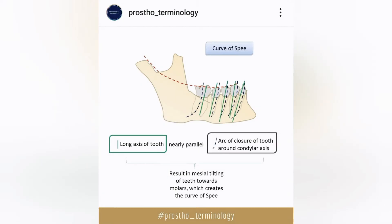Before getting to the actual Curve of Spee, I wanted to elaborate on why and how it is formed. In this diagram, the green lines denote the long axis of the tooth — an imaginary line that passes through the center of the tooth. The dotted blue line is the arc of closure of the tooth around the condylar axis. The long axis and this arc should be parallel or nearly parallel to each other. To achieve this, there is a slight mesial inclination of our molars, as a result of which the Curve of Spee is formed.